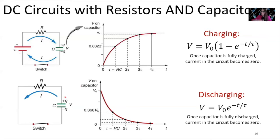We have that charge stored, and now we are taking that charge — it runs a current and discharges through the resistor, dissipating power. The equation that describes how this potential changes in time as we discharge is: V equals V-naught — the maximum potential that was already on the plates — times e to the minus t over tau. Once the capacitor is fully discharged the current in the circuit also becomes zero, and all the charge has been removed from the plate.